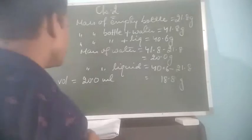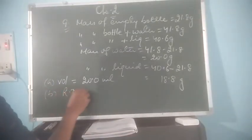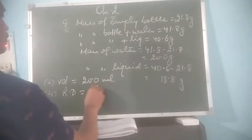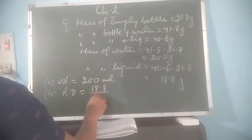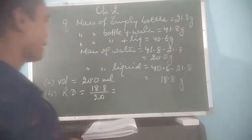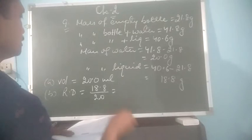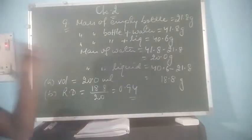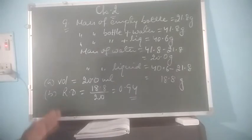Now find out the relative density. Relative density is equal to mass of liquid divided by volume of water. That is 18.8 is the mass of liquid, and the volume equals 20.0. So when you divide this you will get 0.94. So 0.94 is the relative density. This is question number 9.